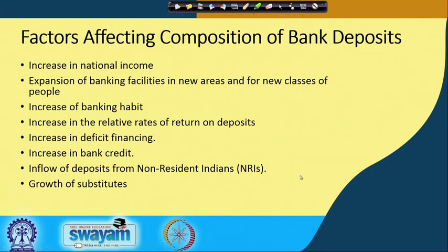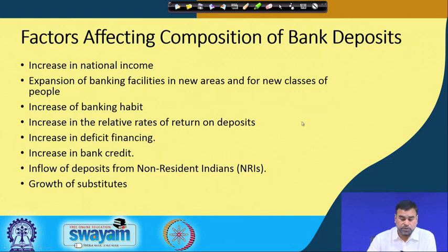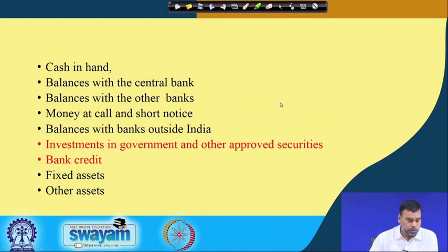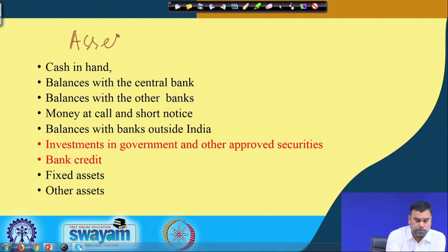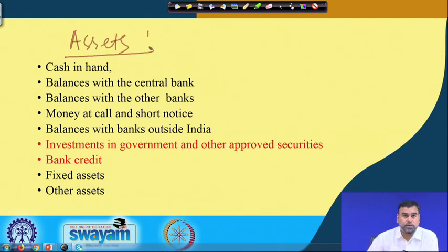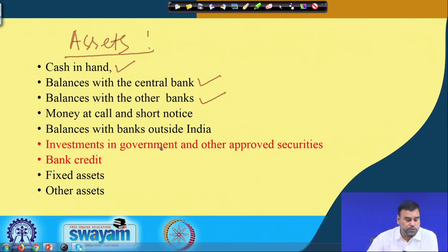These are the different factors which affect the composition of bank deposits for the commercial bank. Now looking at the assets side — the assets of the commercial bank include: cash in hand, balances with the central bank, balances with other banks, money at call and short notice, balances with banks outside India, investment in government and other approved securities, bank credit, fixed assets, and other assets.